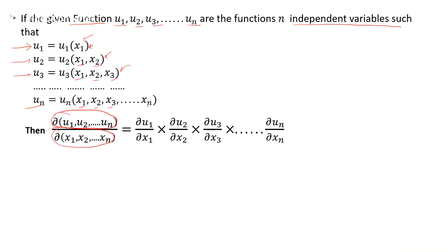Then the Jacobian of u1, u2, ..., un with respect to x1, x2, ..., xn equals the partial derivative of u1 with respect to x1, times the partial derivative of u2 with respect to x2, times the partial derivative of u3 with respect to x3, and so on. You can easily prove this property by taking three functions u1, u2, u3.